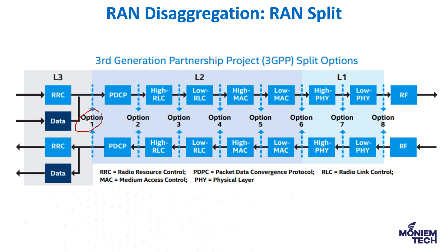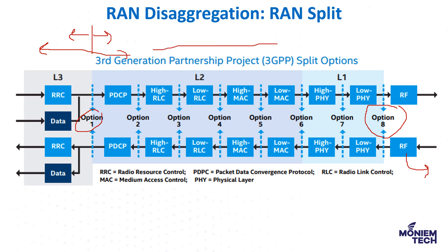As you can see, there are options from option 1 to option 8, ranging from RF at one end to RRC at the other. For example, option 1 keeps only RRC separated, while option 2 groups PDCP with RRC in one node. We will focus on just two splits — option 7 and option 2 — as they are the most relevant to Open RAN.